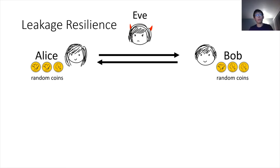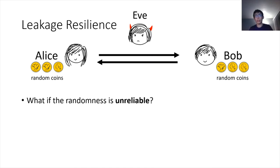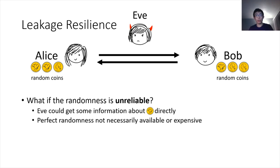Throughout this talk, we'll be dealing with another layer of security called leakage resilience. Alice and Bob use some internal randomness to execute the protocol. The basic question that leakage resilience asks is: what happens if this randomness is unreliable? That could be caused by several reasons — for instance, Eve could have some kind of backdoor access to Alice and Bob's devices and learn some information about those random coins, or Alice and Bob cannot reliably produce uniform randomness needed for the protocol execution.